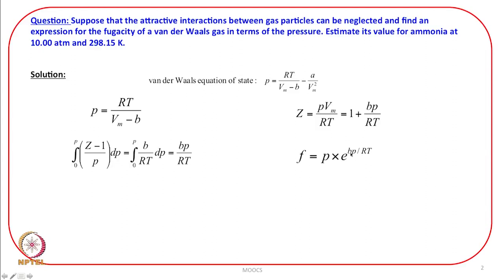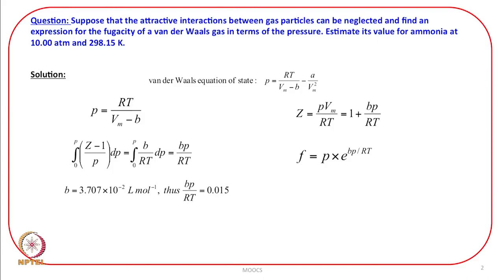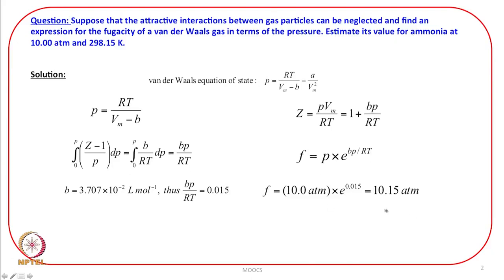Now, if I know the values of B, P, R, and T, I can calculate the fugacity. All the information is given. The value of B is 3.707 × 10⁻² litre per mole. When you substitute in BP/RT, using R and T in suitable units — since pressure is in atmosphere, it is better to use R in litre·atmosphere per Kelvin per mole — it turns out to be 0.015. And then substituting into f = P · exp(BP/RT), with pressure 10 atmosphere and BP/RT = 0.015, the answer comes to be 10.15 atmosphere.